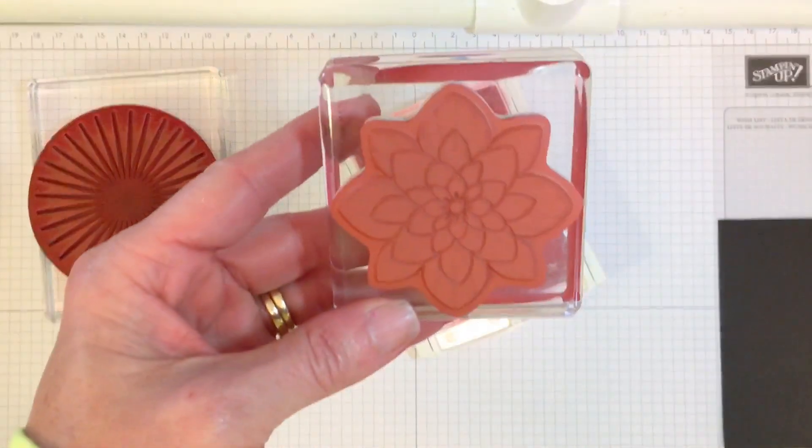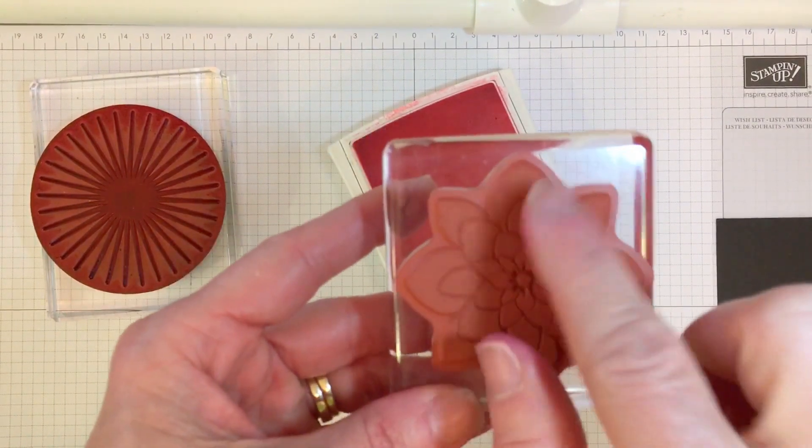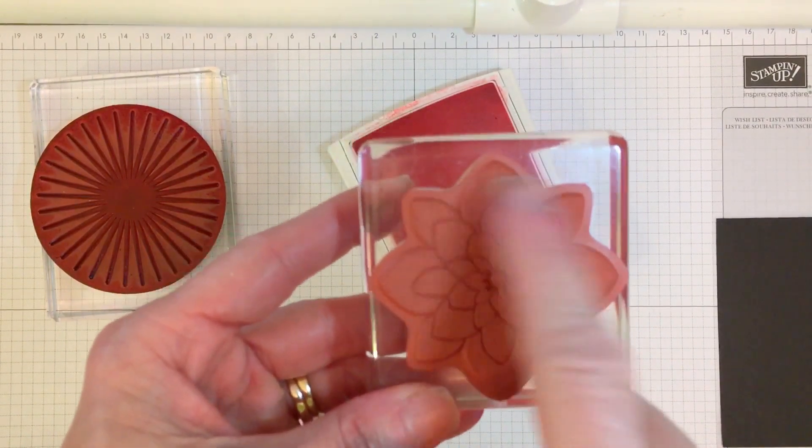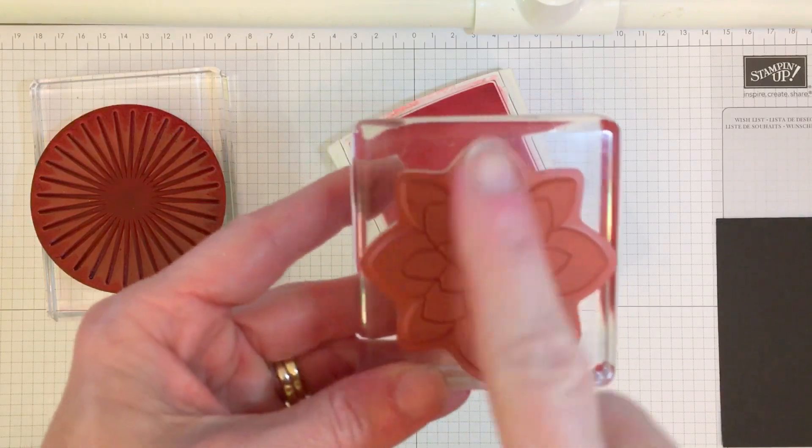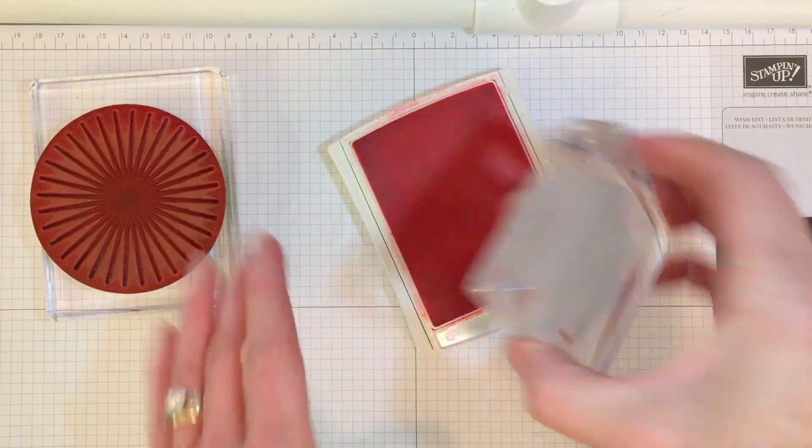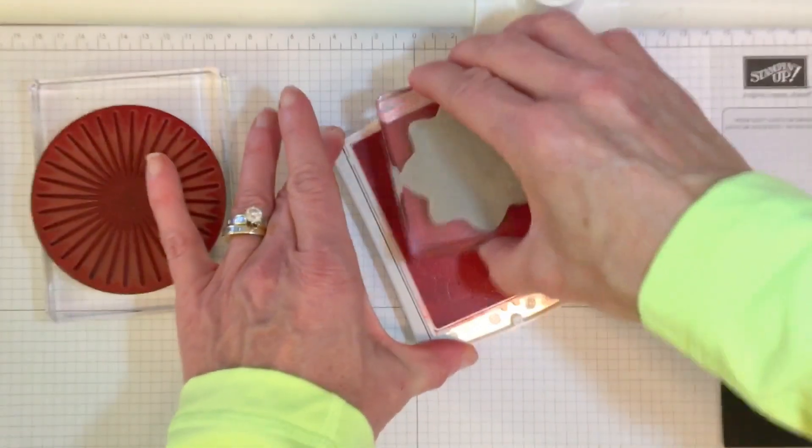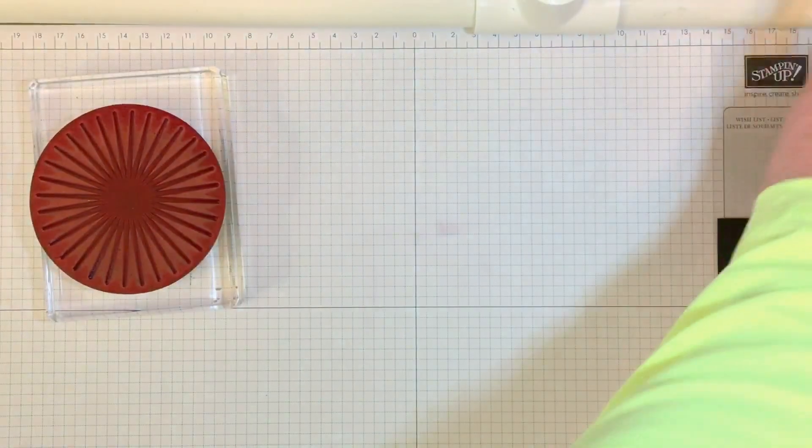Now, a trick with the medallion is you want to make sure you have the fatter petal, or the bigger petal, at like the north, the east, the south, and the west. It makes it a lot easier when you go to punch. So I'm going to just ink it up, and then hopefully this is all clear.